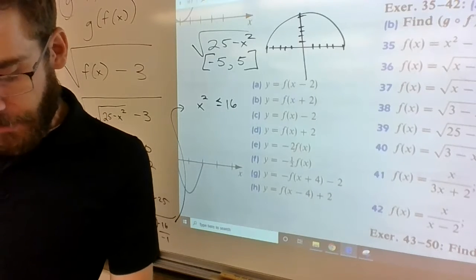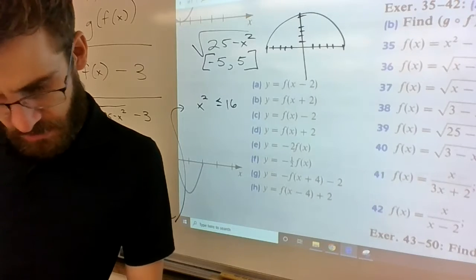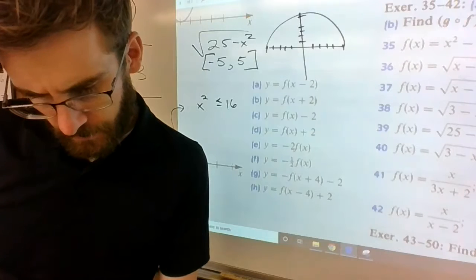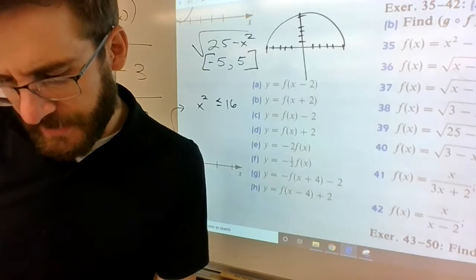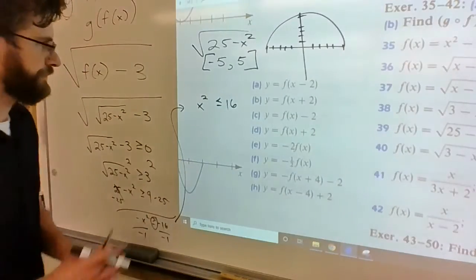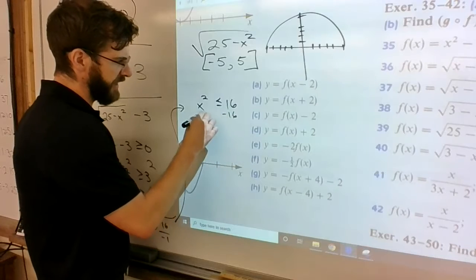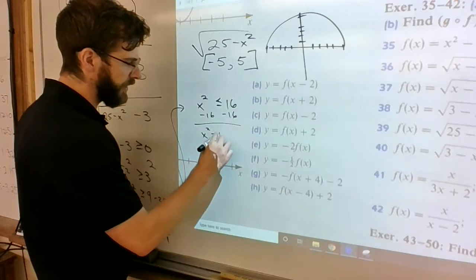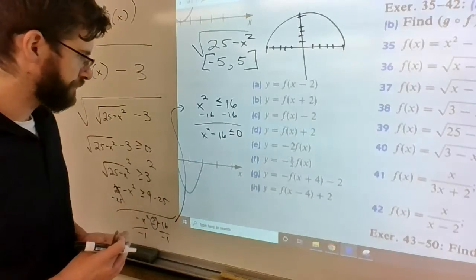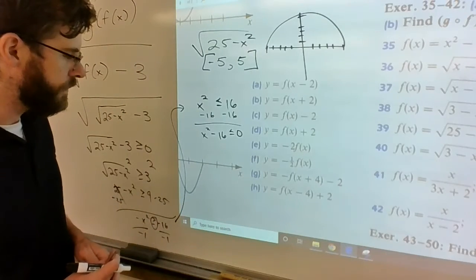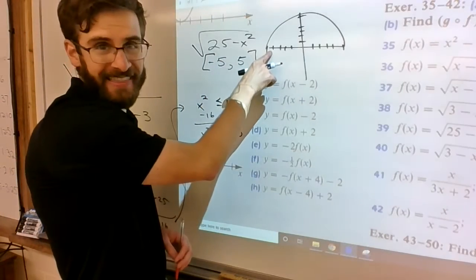And you've got x² is less than or equal to 16. So keep in mind here with x² compared to 16, you can take this and actually move the 16 to the left hand side. Think about x² - 16 is less than or equal to zero.